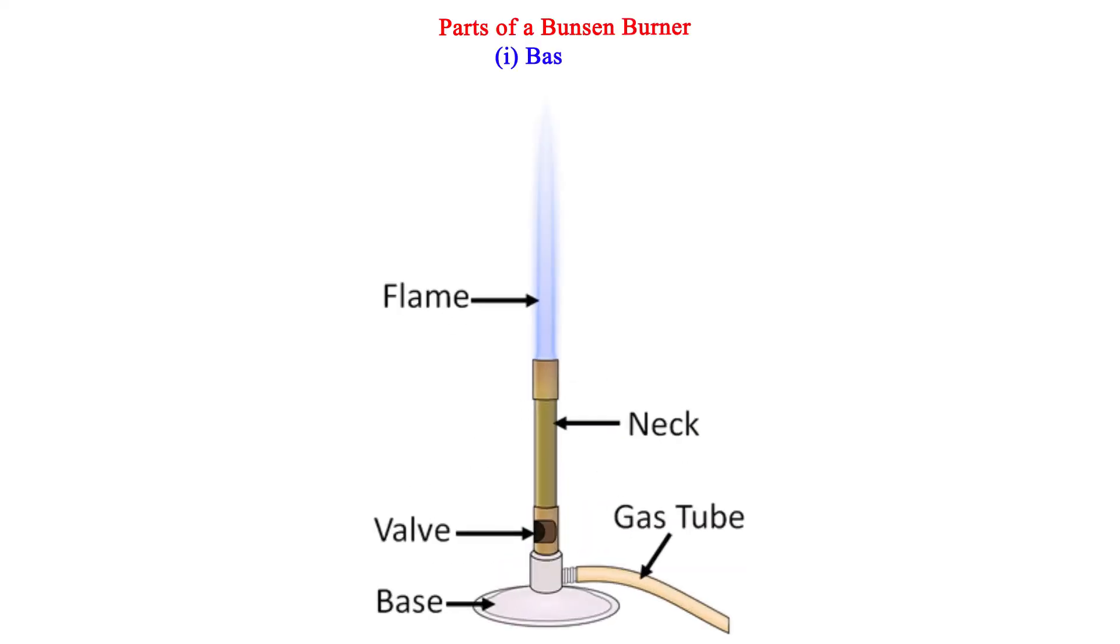Parts of a Bunsen burner. 1. Base plate: To ensure the burner can stand on its own.